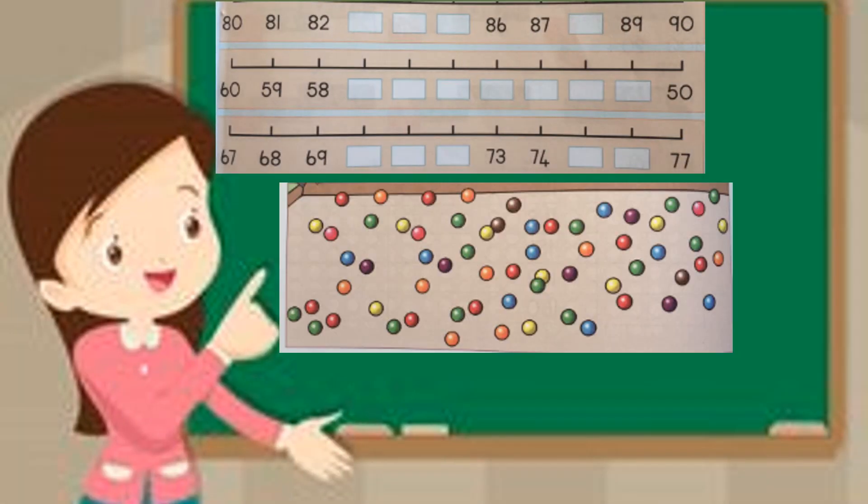I'm sure you can still remember how to count on the number line. The first thing you have to do when you count on the number line is look. Are they counting forwards or backwards? And then you complete the missing numbers.